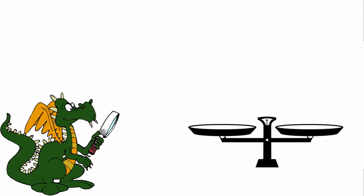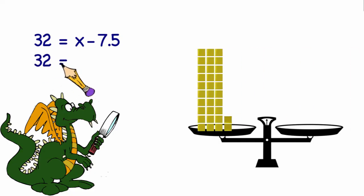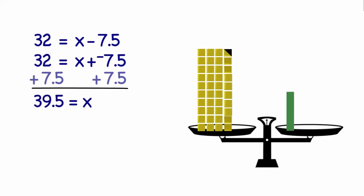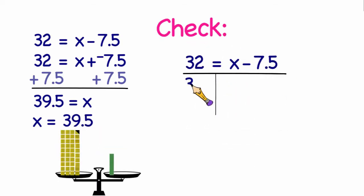So let's look at some other examples. 32 is equal to x minus 7.5. I prefer to rewrite this as 32 is equal to x plus negative 7.5. So what we need to do is get the x by itself. To do that, we need to add 7.5 to each side of the equation. And that would give us 39.5 is equal to x. Or we could just say x is equal to 39.5. To check that answer, we would substitute 39.5 in for the x in the original equation. And since 39.5 minus 7.5 is 32, our solution checks.